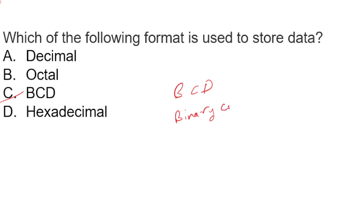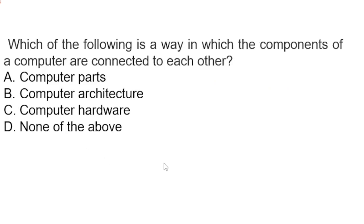Next question: which of the following is a way in which the components of a computer are connected to each other? Computer parts, computer architecture, computer hardware, none of the above. It is saying components of a computer connected to each other, so it is computer architecture. Option B is correct. Computer architecture is concerned with the way hardware components are connected together to form a computer system. It acts as an interface between hardware and software.